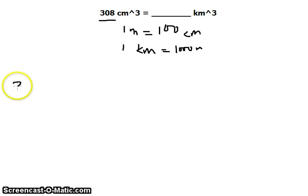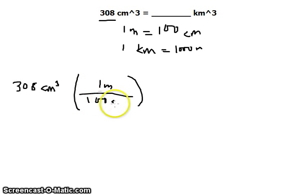Now we can proceed with our solution. That is 308 cubic centimeters, and then we multiply that by the first conversion factor from centimeters to meters, which is one meter in the numerator and 100 centimeters in the denominator. But we can't cancel this out because this is volume and this is linear, so we need to cube the whole thing so that we could convert the unit.